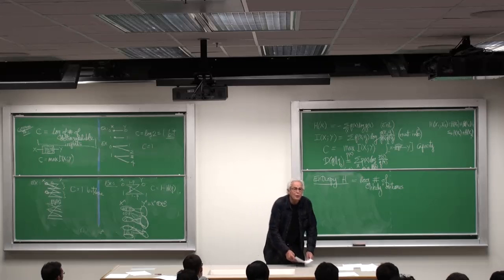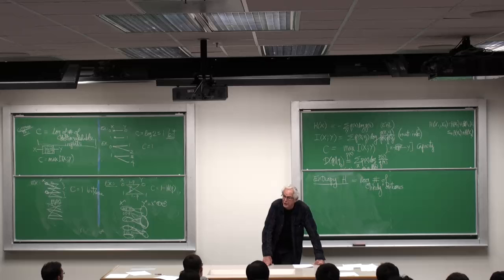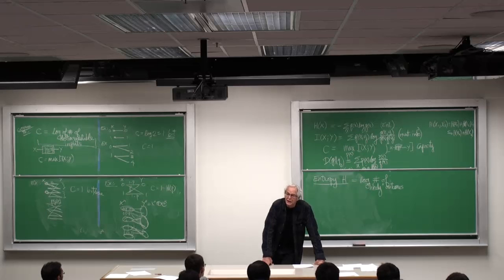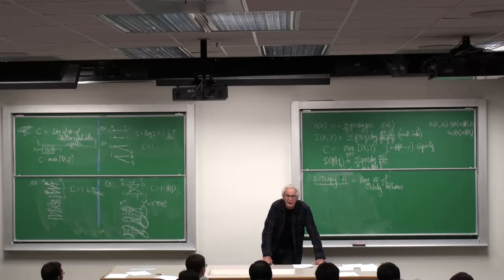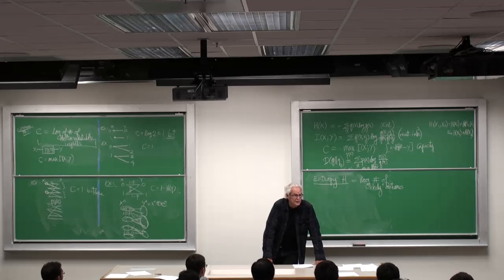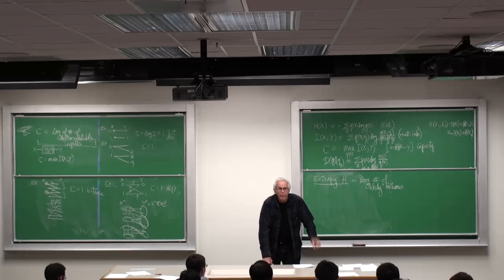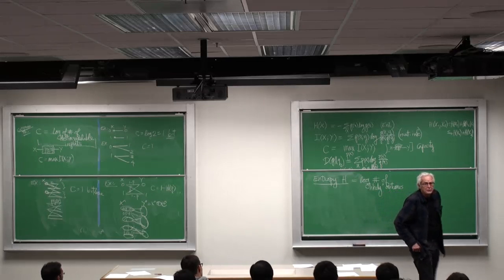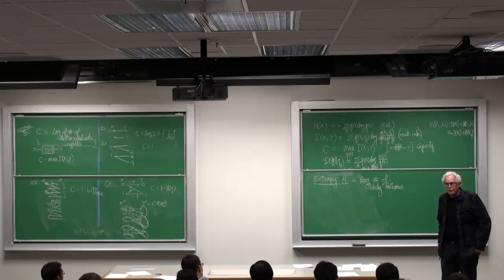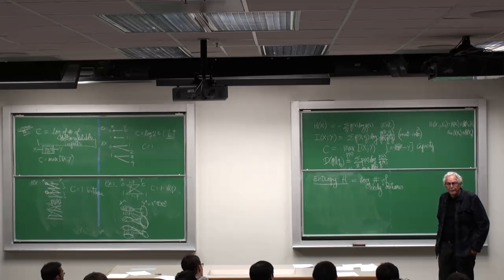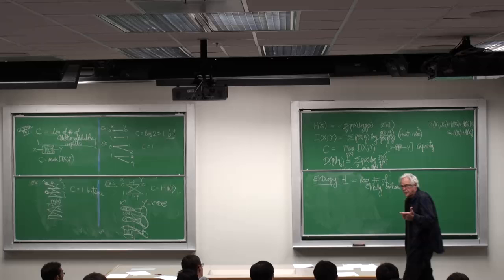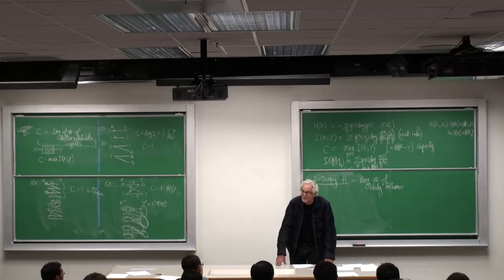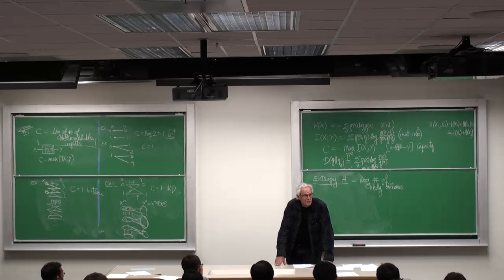So what if the coins come up heads with probability P? P equals point one. Now what's likely to happen is I'm going to get a sequence of ones and zeros, or if you wish, heads and tails, which has 10% ones and 90% zeros. That's what's likely. Why is it likely? The law of large numbers. The proportion of ones will be about P.